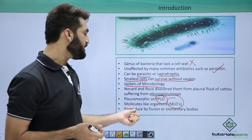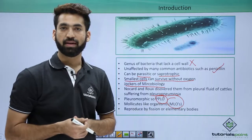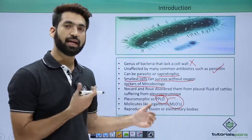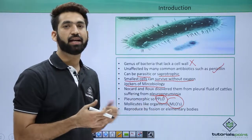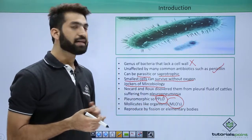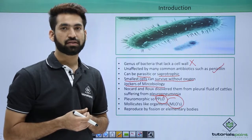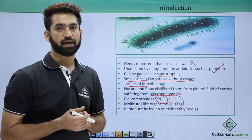Mycoplasma basically divide by fission, or through the presence of some elementary body that takes care of reproduction. The next session will detail you about the structure of Mycoplasma.